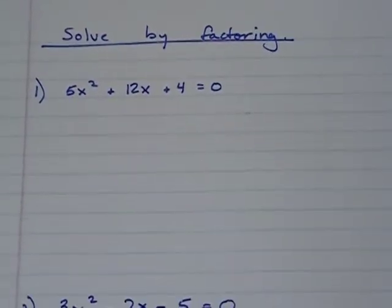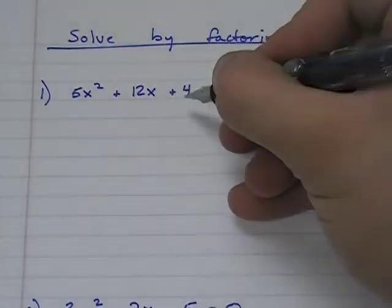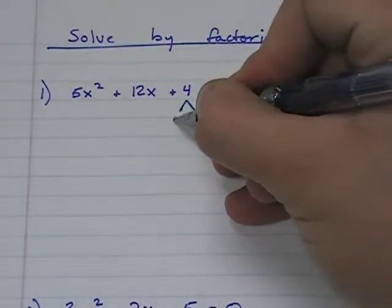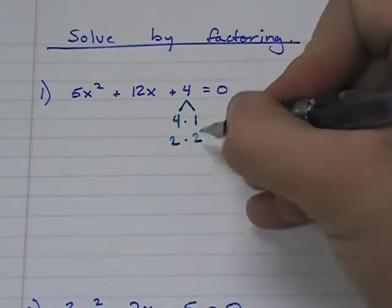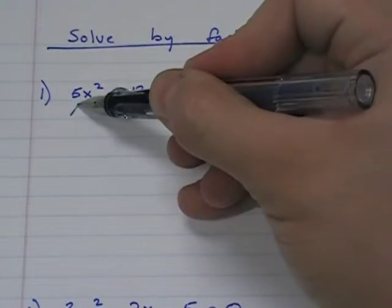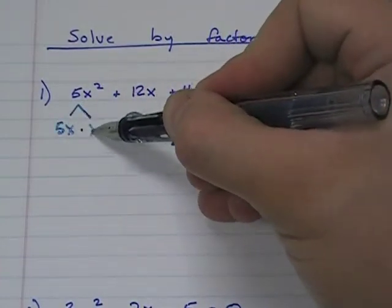So we say, okay, well the first thing we need to do is simply write the factors of the leading term and the number. The factors of 4 are 4 and 1 or 2 and 2. And the factors of 5x squared are 5x and x.